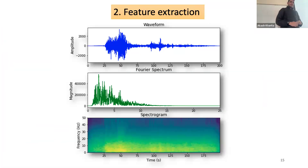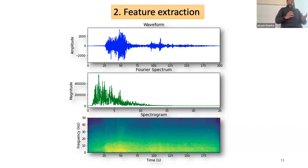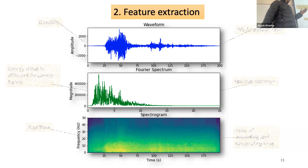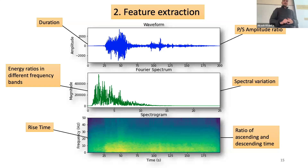The second step is feature extraction, which I've been particularly interested in. In classic machine learning, scientists going for discrimination of different types of seismicity use a particular set of features developed from their experience about what characteristics separate different sources — features such as duration, P-to-S amplitude ratios, energy ratios in different frequency bands, rise time, and similar properties. I extracted this same set of features that people in other studies have used; I call these physical features because they are based on physical characteristics.